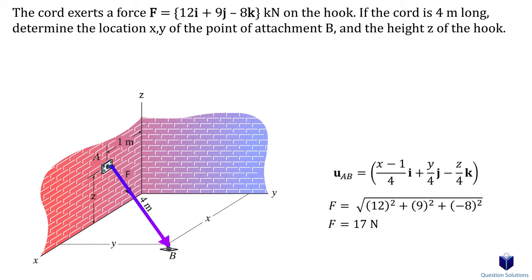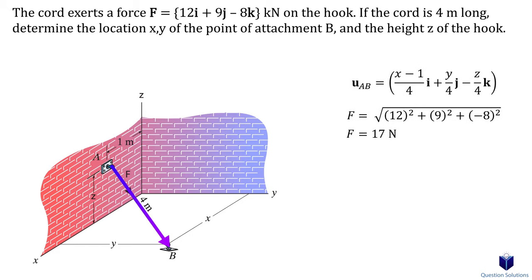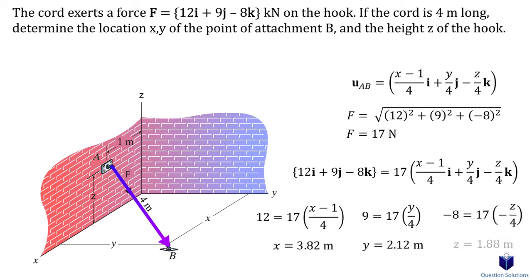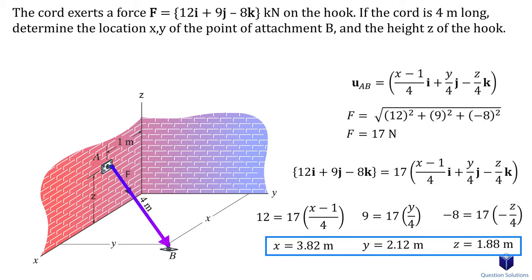Now let's look at the force given to us in Cartesian form. We can find the magnitude of this force using our usual method. We know that a force in Cartesian form is simply the magnitude of force times the unit vector, and we are already given the Cartesian form of the force. To solve, all we need to do is equate the components: i components to i components, j components to j components, and k components to k components. Those are our answers. That should cover the types of problems you will face when it comes to forces directed along a line.